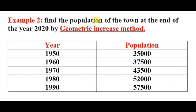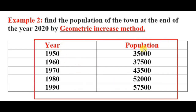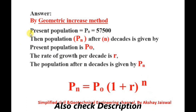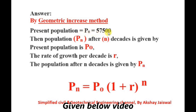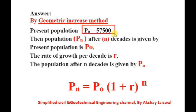The formula is given by: PN = P0 × (1 + R)^N. Now, example number two: find the population of the town at the end of the year 2020 by the Geometrical Increase Method. A table is given in which year and population data are provided, and the population in the year 2020 is to be calculated. The present population P0 is 57,500, which is the latest known population from the given table.